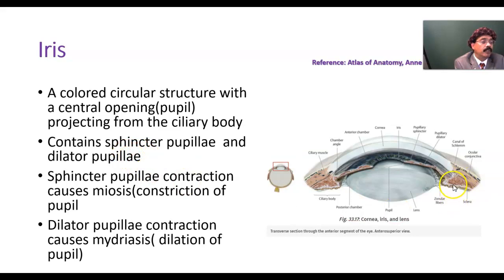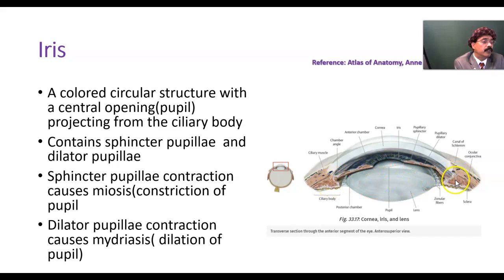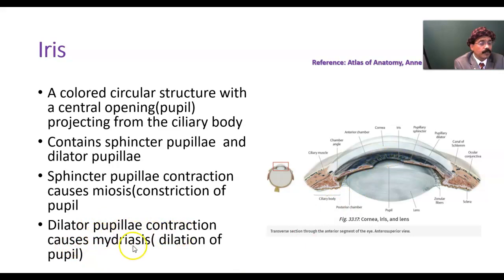There are two types of muscle present in the iris. One is the sphincter pupillae, which will constrict the pupil — it will decrease the diameter of the pupil. The other is the dilator pupillae — its contraction will increase the diameter of the pupil. Here is the ciliary body, here is the iris, and the gap in the center of the iris is the pupil. Contraction of the dilator pupillae causes mydriasis or dilation of the pupil.